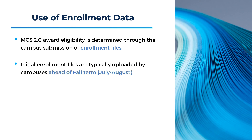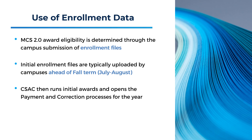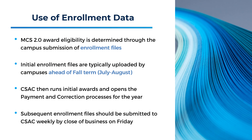Initial enrollment files are typically uploaded by institutions just ahead of the fall term in July or August. CSAC will announce the opening of the enrollment file submission process in a grant operations memo. Once all schools have submitted initial enrollment files, CSAC will temporarily close the enrollment file submission to run the initial awarding process. Finally, CSAC will reopen file submission so schools can continue submitting subsequent enrollment files throughout the academic year.